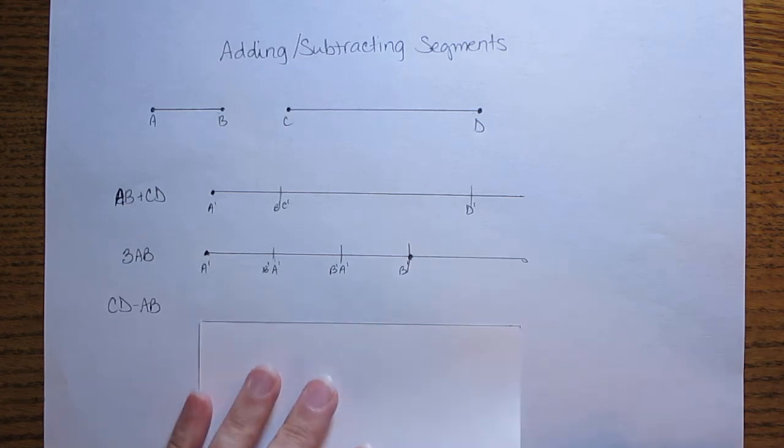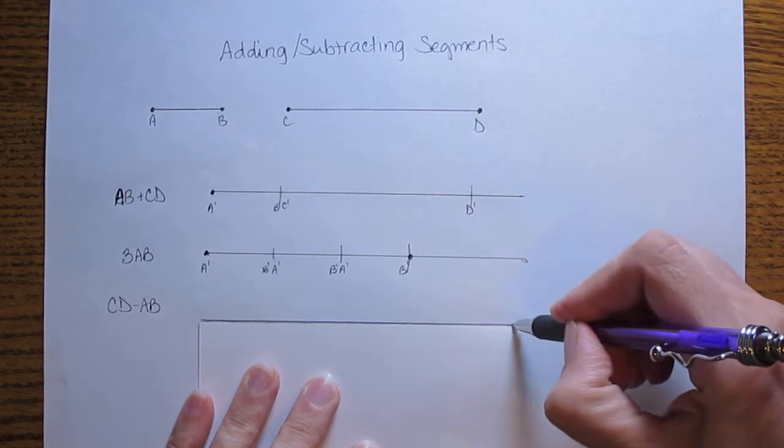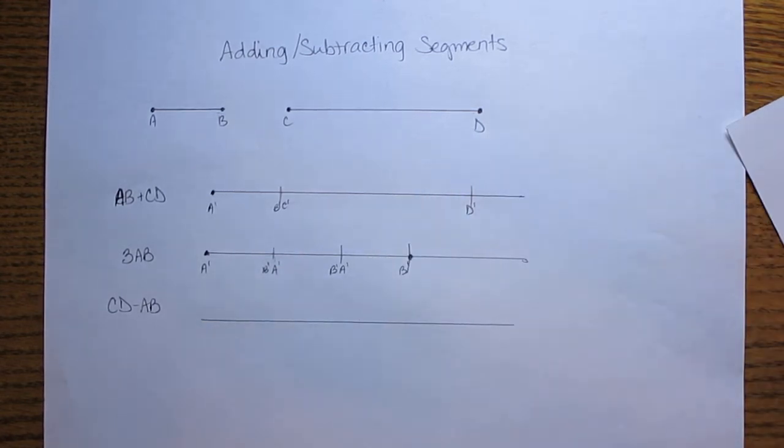Start the same way as I did the other two with my straight edge. Make a nice long line segment there. Now I'm going to start by copying my longer segment CD first.